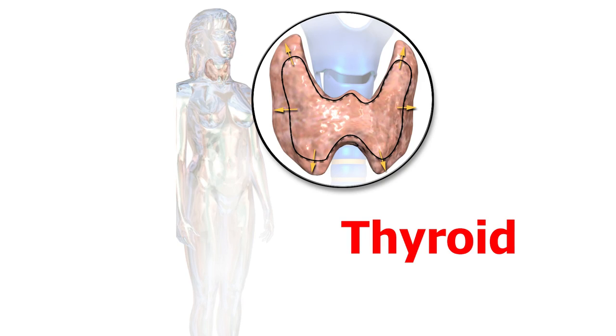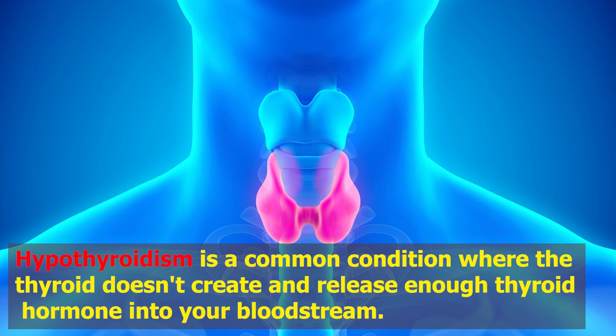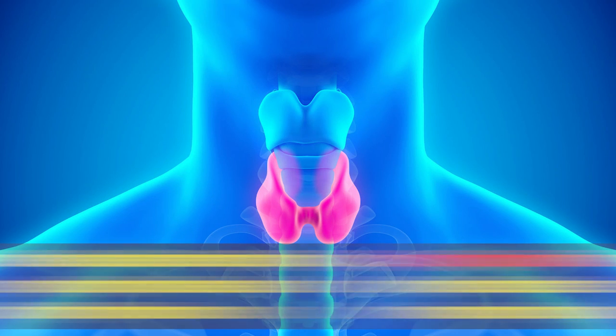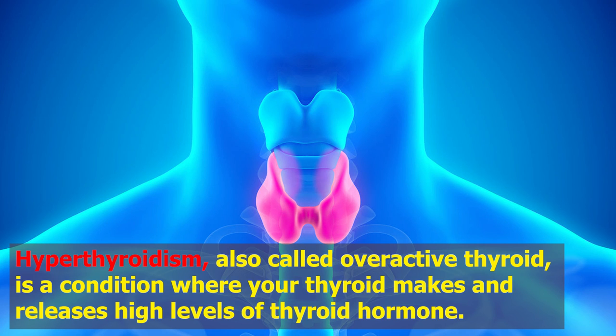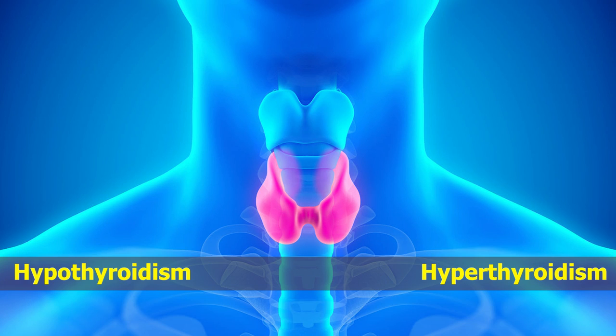If you look at thyroid function, there is hypothyroidism and hyperthyroidism. In hypothyroidism, the thyroid is functioning at a lower level. In hyperthyroidism, the thyroid gland is also functioning at a lower or abnormal level. If we treat hypothyroidism and hyperthyroidism, the swelling is going to reduce.